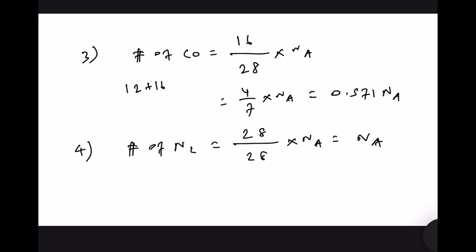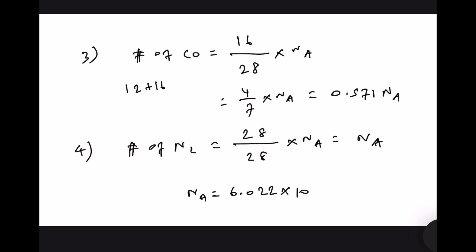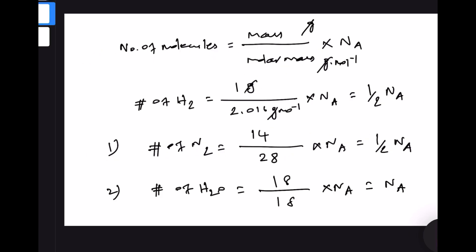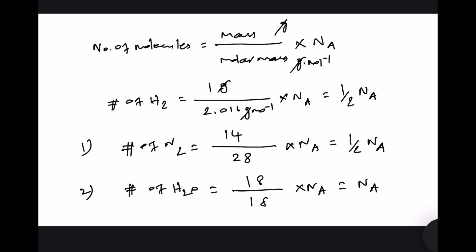By the way, the Avogadro number NA is equal to 6.022 into 10 to the power 23. That is something you already know, and therefore the correct answer is option 1.